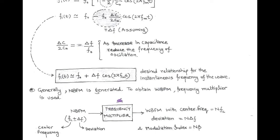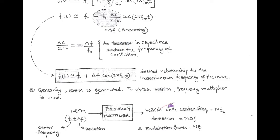The input of the frequency multiplier is narrow band FM having carrier or center frequency Fc plus or minus ΔF, where Fc is the carrier frequency and ΔF is the frequency deviation. At the output of the frequency multiplier, we have N times the carrier frequency and also N times the frequency deviation — that is called wide band FM. If narrow band FM has modulation index β, after passing through the frequency multiplier we get N times β, giving wide band FM.